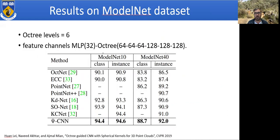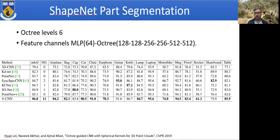Here are our results on the ModelNet dataset, including ModelNet 10, which is a shorter version of ModelNet 40. At the time of CVPR 2019, we outperformed all previous methods. Here are our results on the part segmentation problem. We mention the number of levels in the octree and the feature maps constructed within the network. We achieved the highest mean intersection over union and outperformed other methods in quite a few categories, though not all. This was also presented at CVPR 2019.